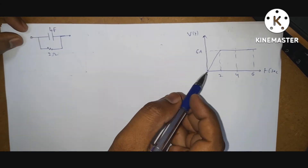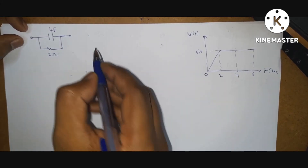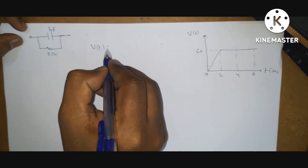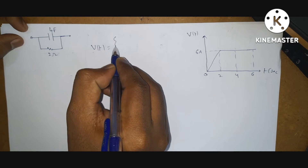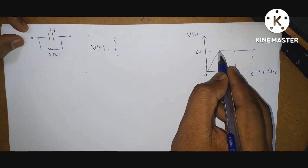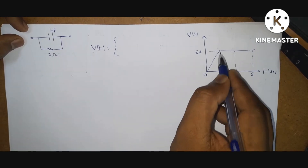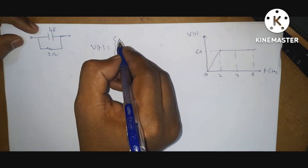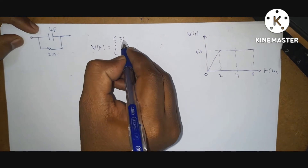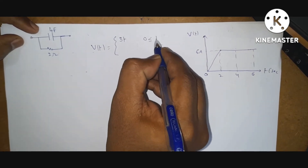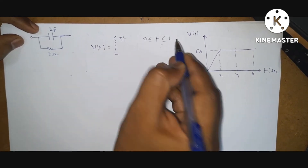From the given voltage waveform, write down the expression for voltage. V of t is equal to: from 0 to 2 seconds, apply the line equation, you will get 3t volts from 0 to 2 seconds.